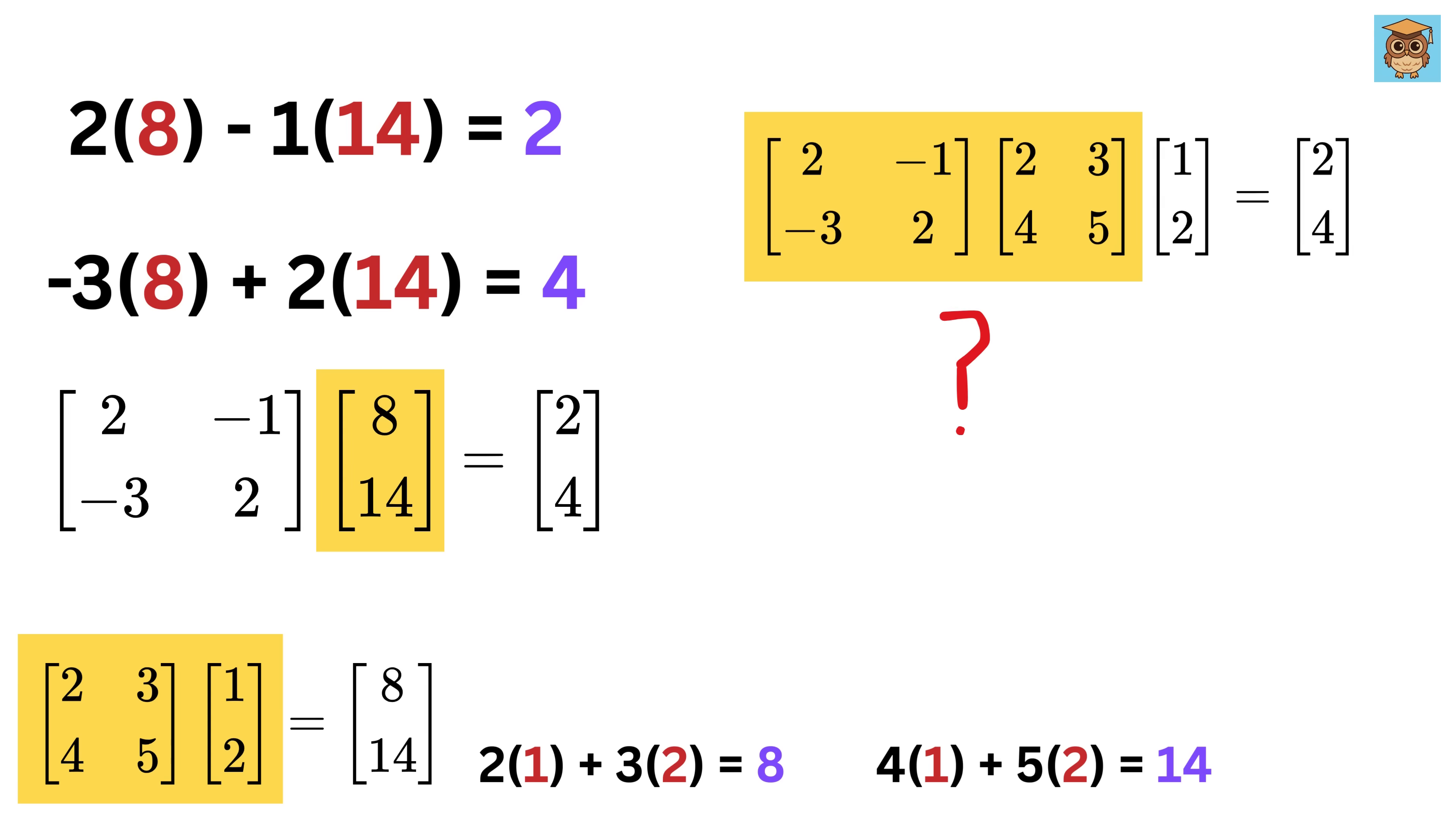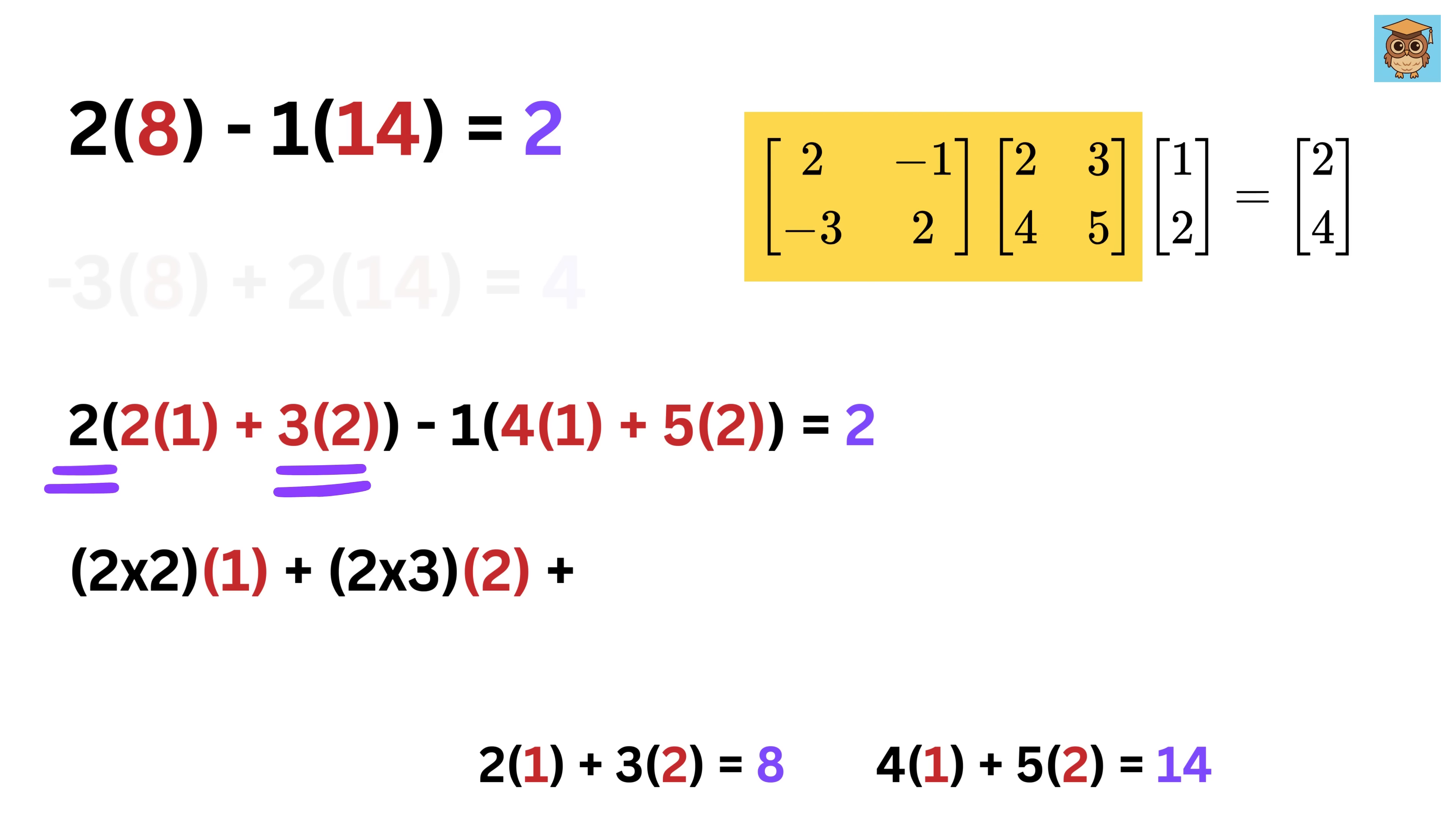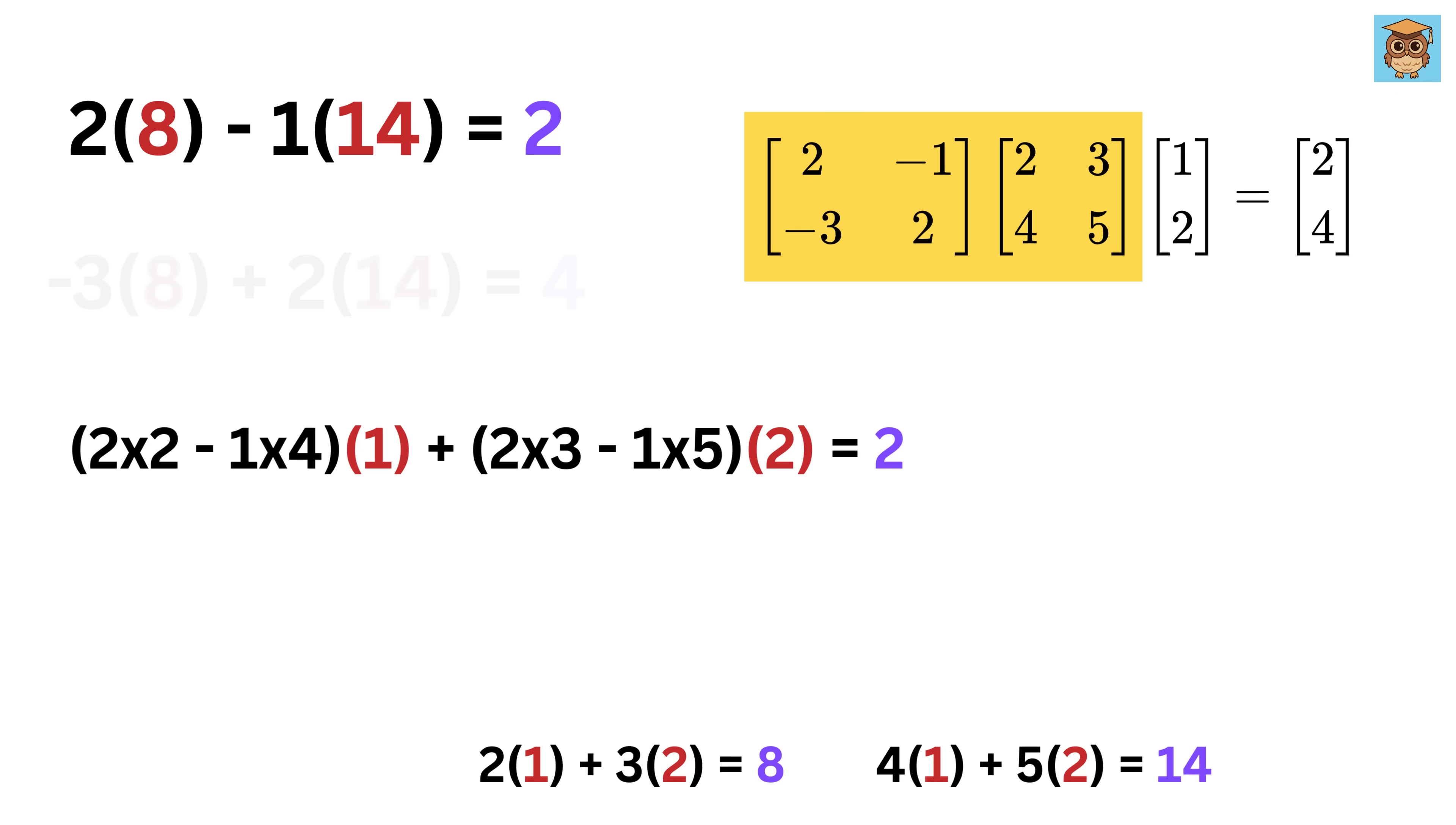But what will that matrix be? Look carefully. We can rewrite this 8 using this equation, right? Similarly, we can rewrite this 14 using this equation. So, let us expand it one by one. This will become 2 times 2 times 1 plus 2 times 3 times 2 plus minus 1 times 4 times 1 plus minus 1 times 5 times 2. Now combine these two terms together to get this, then combine these two terms together to get this. Noice.